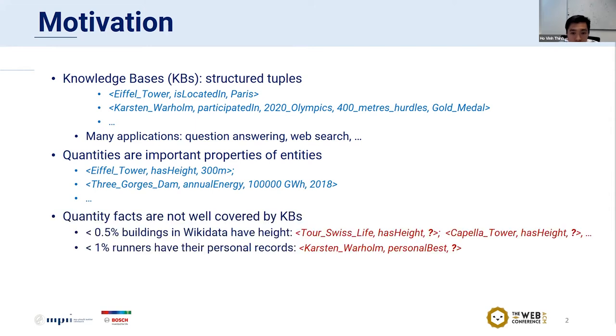However, quantity facts are not well covered in many KBs. For example, only less than 0.5% of buildings in Wikidata have their height property, and this important property is usually not available, especially for unfamous buildings. For another example, Wikidata has information about many runners but contains their personal records for only less than 1% of them. So this is the motivation for us to propose a method for automatically populating KBs with quantity facts.